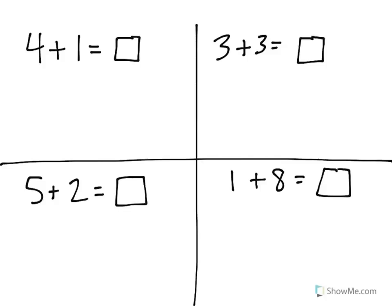Let's start at the top left. We have 4 plus 1. That means one group has 4 and the other group has 1.